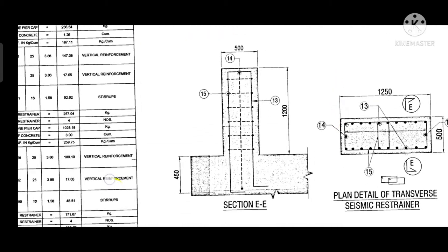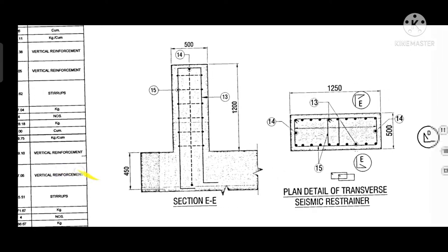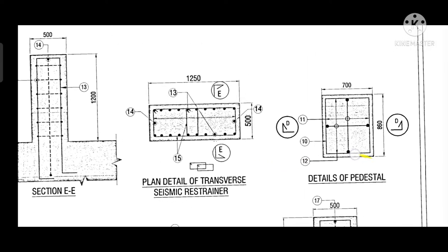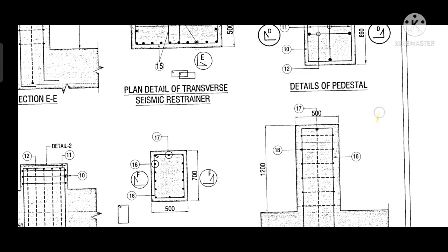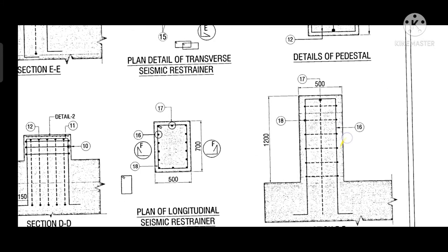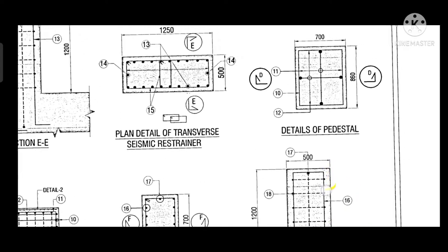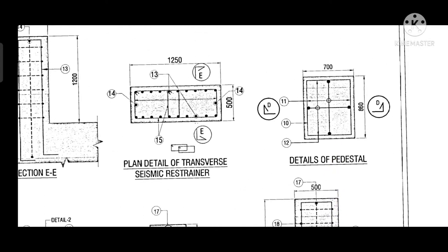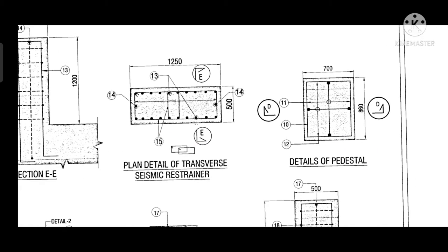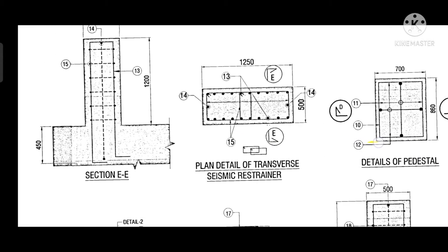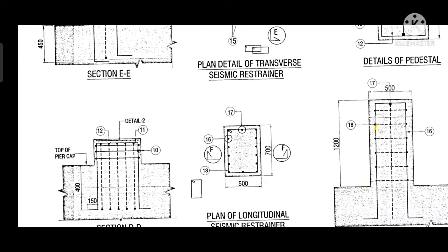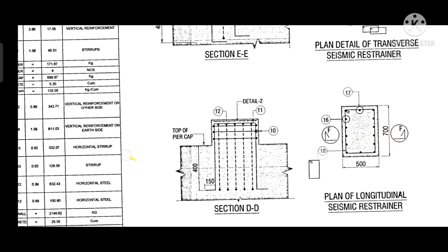This is a detailed drawing of the approach slab, and this is the detail drawing of the seismic restrainer and arrestor legs. Also the pedestal long grid — using this general detail drawing and pedestal drawing — we have the 70 by 816 size of the pedestal. The reinforcement is given in the schedule.